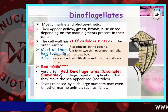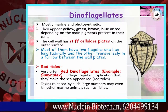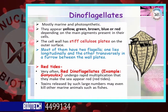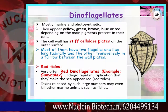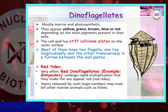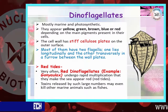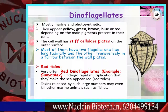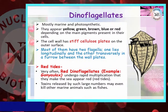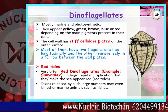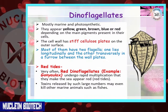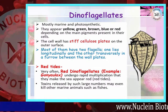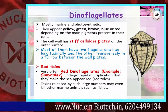Dinoflagellates are mostly marine and photosynthetic. They appear yellow, green, brown, blue, or red depending on the main pigment present in their cells. The cell wall has stiff cellulose plates on the outer surface. Most of them have two flagella — one lies longitudinally and the other transversely.